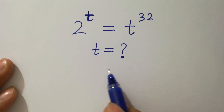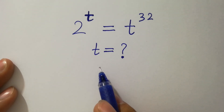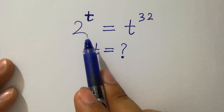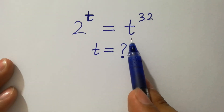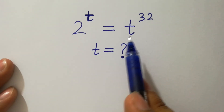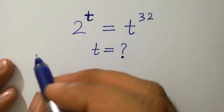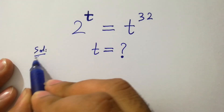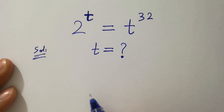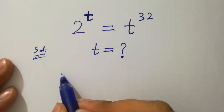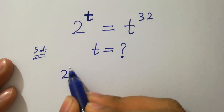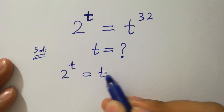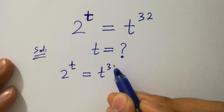Hello friends, find the value of t if 2 to the power t equals t to the power 32. Let's have a solution. So we have a question here: 2 to the power t equal to t to the power 32.